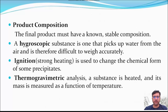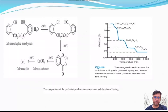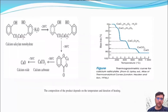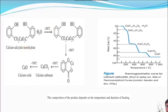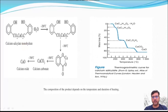Thermogravimetric analysis: a substance is heated and its mass is measured as a function of temperature. The composition of products depends on the temperature and duration of heating. Here you can see the thermogravimetric curve for calcium oxalate.